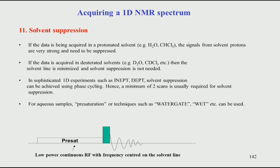This is one way to do solvent suppression, but it is a very crude or brute-force approach — you are simply applying weak radiation at the solvent line. Pre-saturation, although commonly used, is not the best approach. Better approaches are more advanced techniques called WATERGATE, WET, etc., which we will see later in the third or fourth part of the course when we look at more advanced topics.